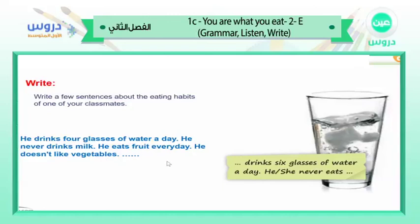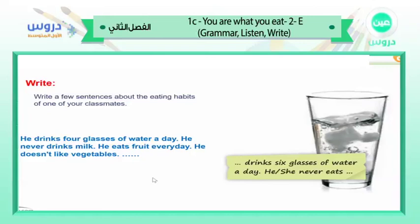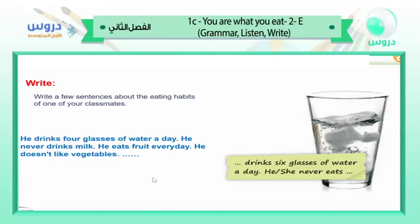You can write about water, milk, fruit, vegetables, chicken, meat, pasta, pizza — any eating habits. You can even write about traditional meals like kabsa. Write as many sentences as you can — 10, 15, 20, even 50 sentences if you can.